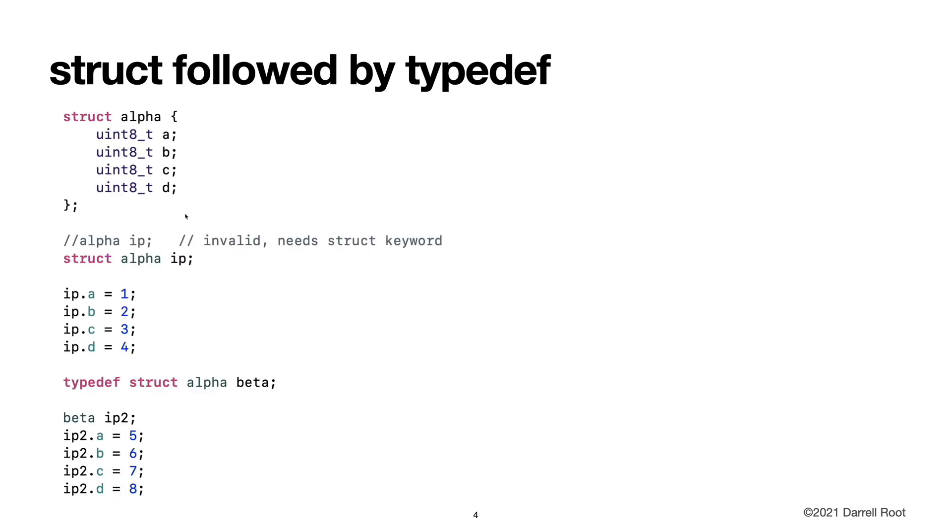Here is the corrected example where we have the struct alpha, and then we can create our variable IP using struct alpha as opposed to just alpha. And then we can assign values to its members. Or we can use a typedef, and in this case we typedef struct alpha to beta. So beta is a new type of struct alpha, and then we can use beta to initialize our variables.